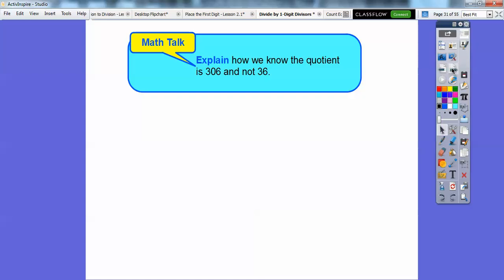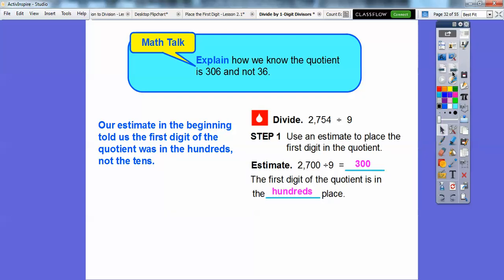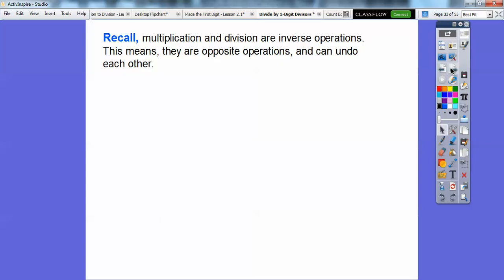So math talk. Explain how we knew that the quotient is 306, not 36. Well, a lot of my students would think it was 36 because they'd forget that 0. But remember in the beginning, our estimate told us that the first digit of the quotient (the quotient is the answer) was in the hundreds spot. So we knew it was going to be 300 something, not 3 tens and 6 ones. This is 300s and 6 ones. So we knew it was in the hundreds spot.